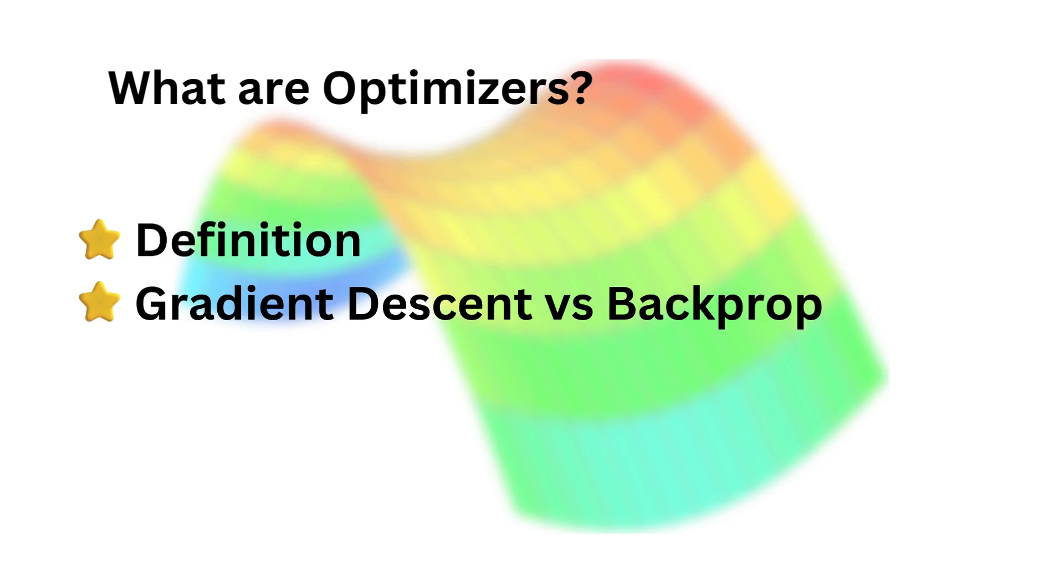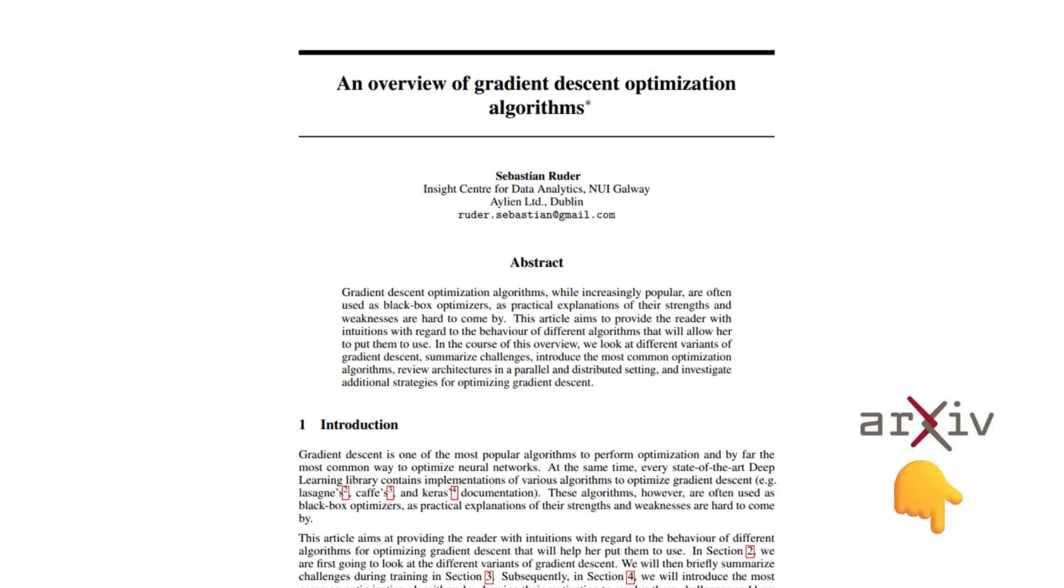We'll then take a look at one of the popular optimizers, gradient descent, and how it compares to another algorithm usually used together called backpropagation. Finally, we'll take a look at three quick examples of optimizers to see how they are structured.